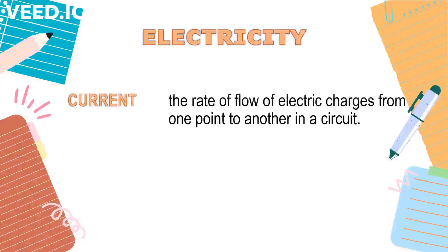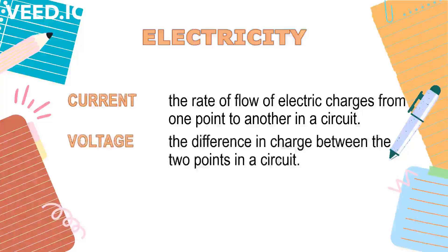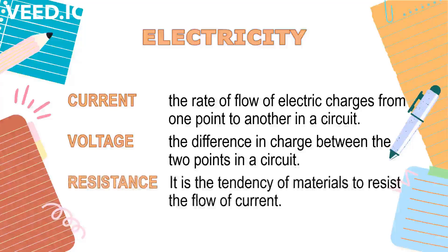Current is the rate of flow of electric charges from one point to another in a circuit. Voltage is the difference in charge between the two points in a circuit. Resistance is the tendency of materials to resist the flow of current.